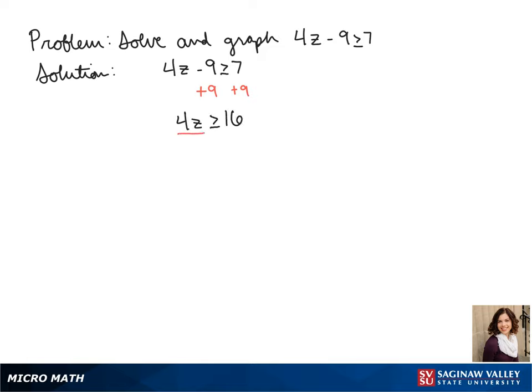To get z by itself, we divide both sides by 4, and we get z is greater than or equal to 4.